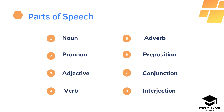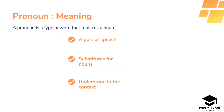We all know that every sentence that we speak and write in the English language has words, and every word has a role in a sentence. According to that perspective, we call it parts of speech, and there are 8 parts of speech in the English language. They are noun, pronoun, adjective, verb, adverb, preposition, conjunction and interjection. In the present video, our focus will be on pronoun.